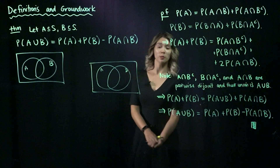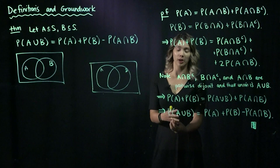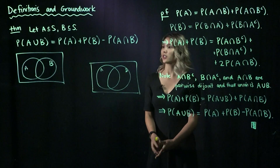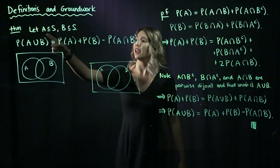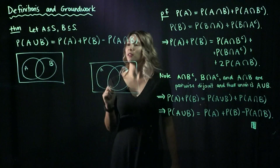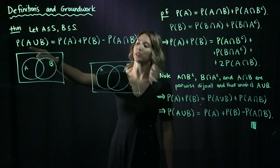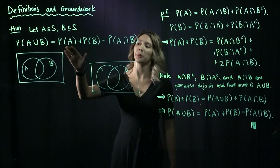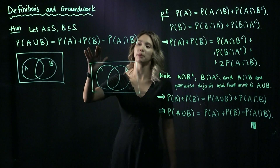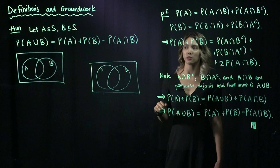Now we're going to discuss one more theorem that results from Kolmogorov's axioms. This theorem says: let A be an event in S and B be an event in S. Then the probability of A union B is equal to the probability of A, plus the probability of B, minus the probability of A intersect B.